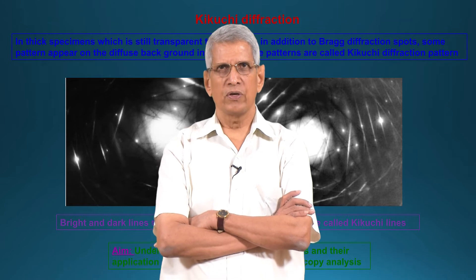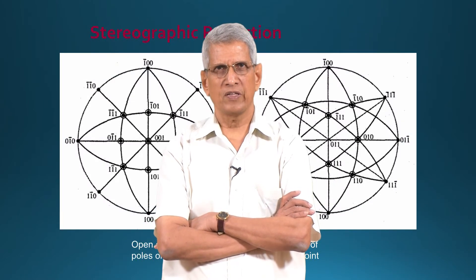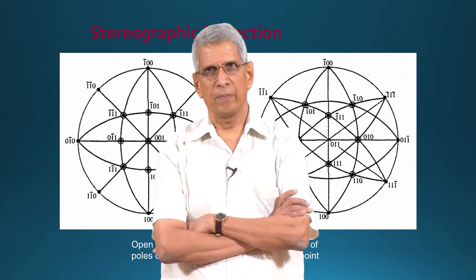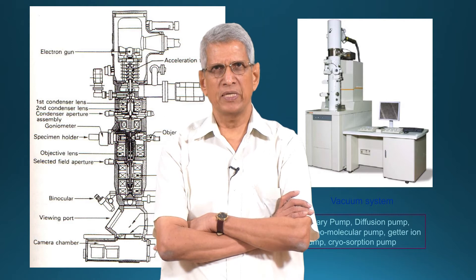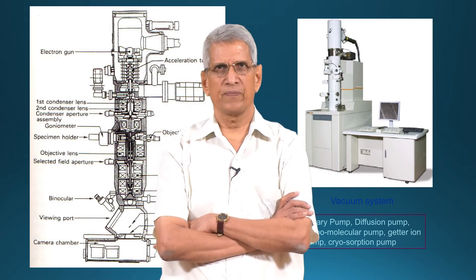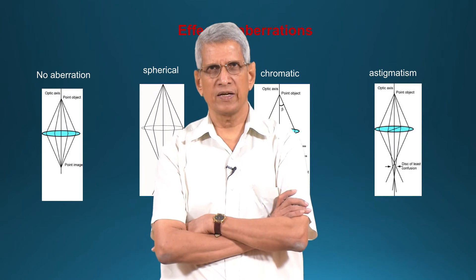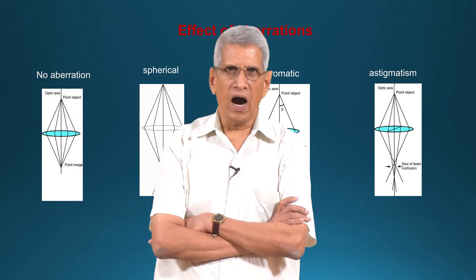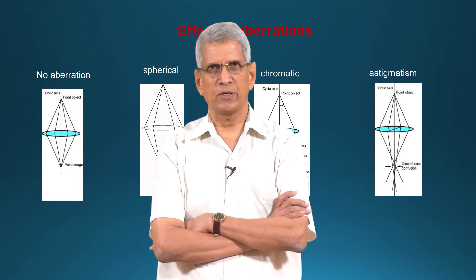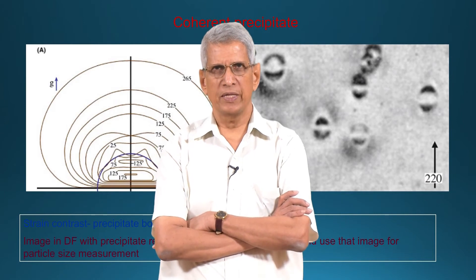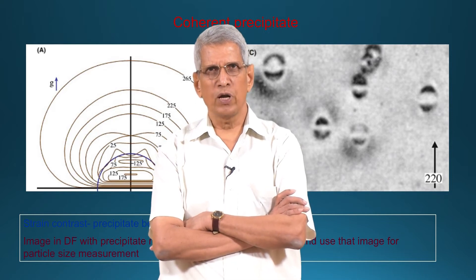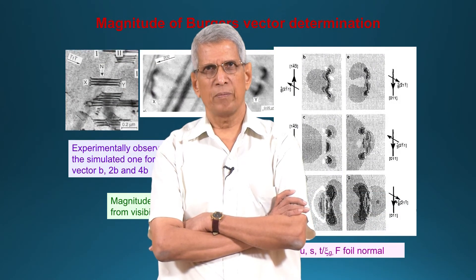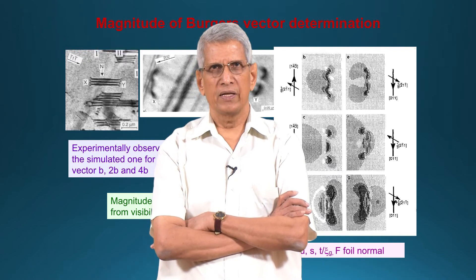We can also get information about the composition of the sample, from length scales ranging from average composition to the position of atoms in the unit cell. All this information we can get in a microscope using different techniques such as high-resolution microscopy, Z-contrast microscopy, conventional electron microscopy, or analytical electron microscopy. From a region of a sample as small as one or two nanometers, we can get information from micro to atomic level.